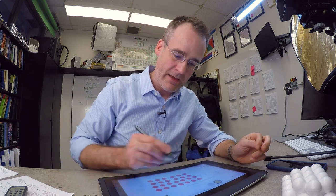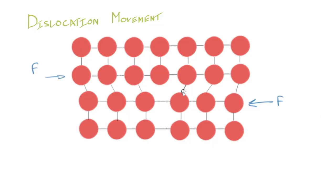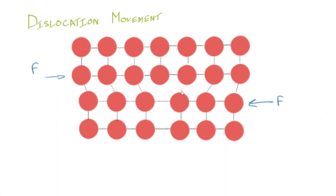So I've drawn a dislocation in here. And what I'd like to do is say, OK, we're going to apply these forces to it. And what will happen is a bond will break and reform as the atoms are moving over.